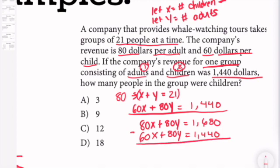I'll subtract the equations. I multiplied by 80 so I can cancel out a variable. Subtracting, I'm left with 20x.